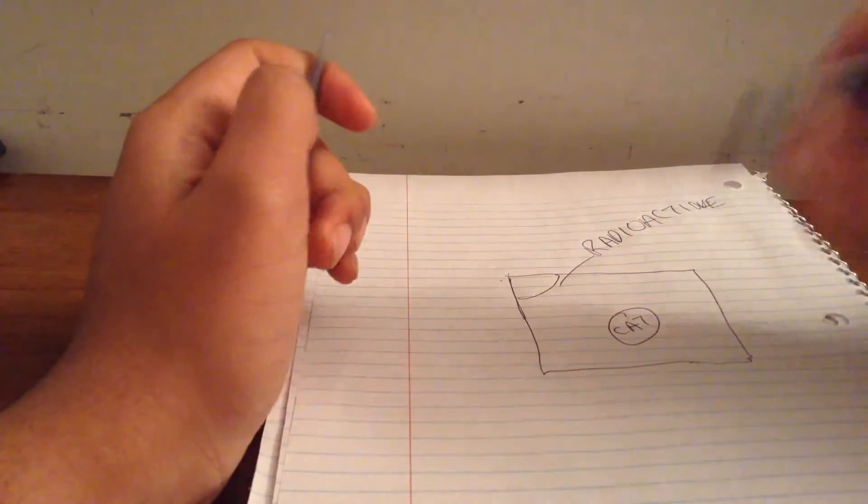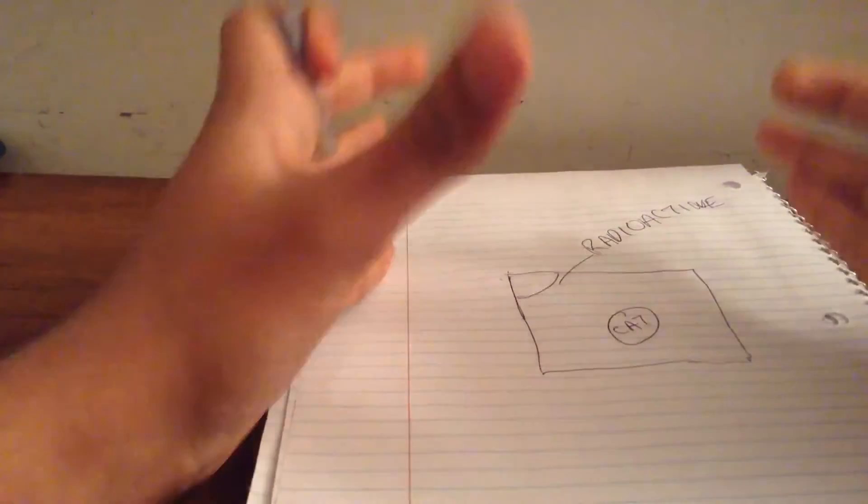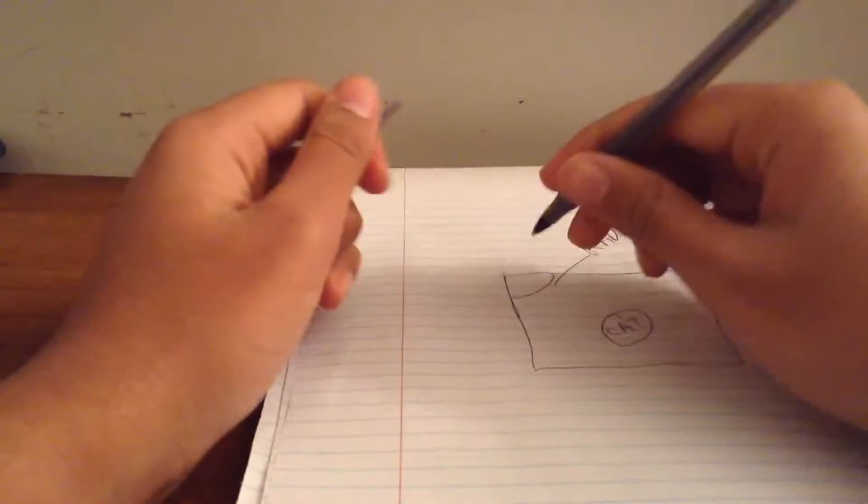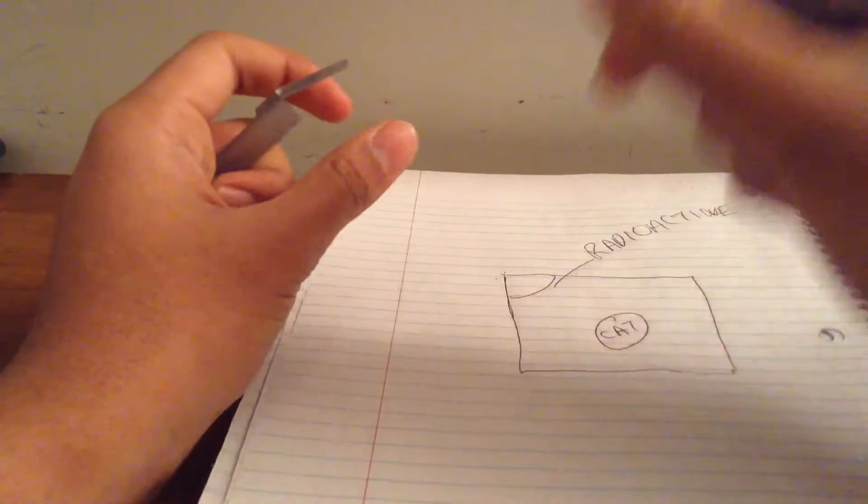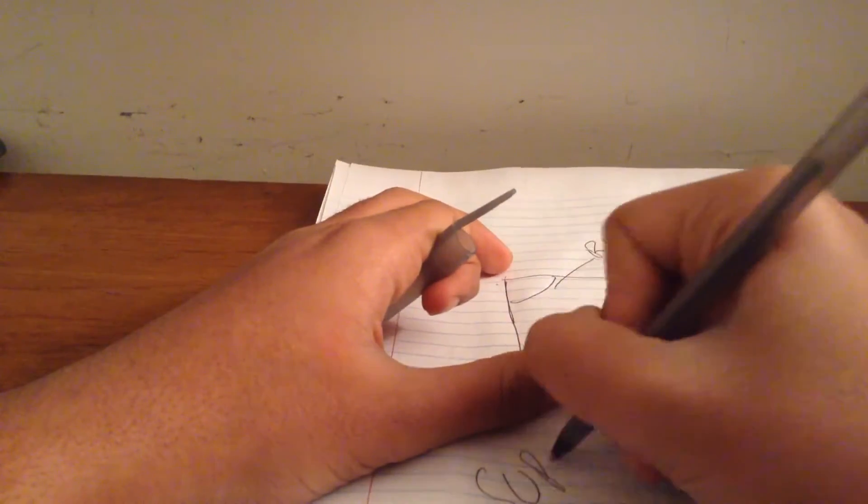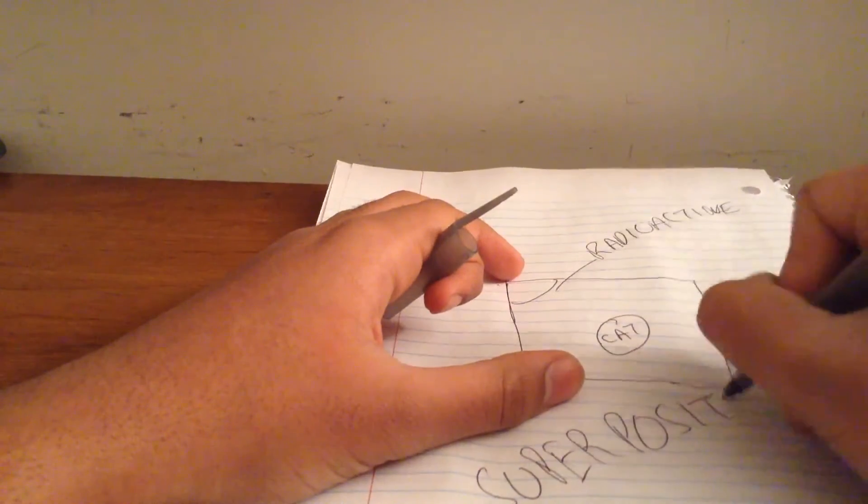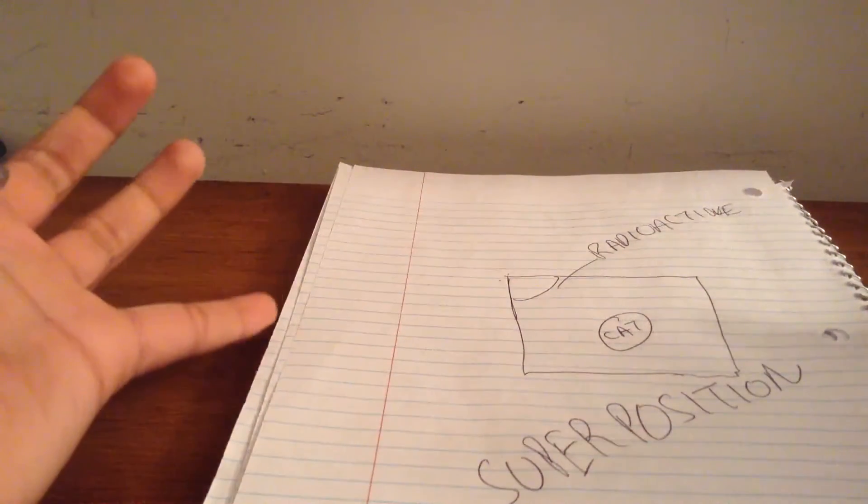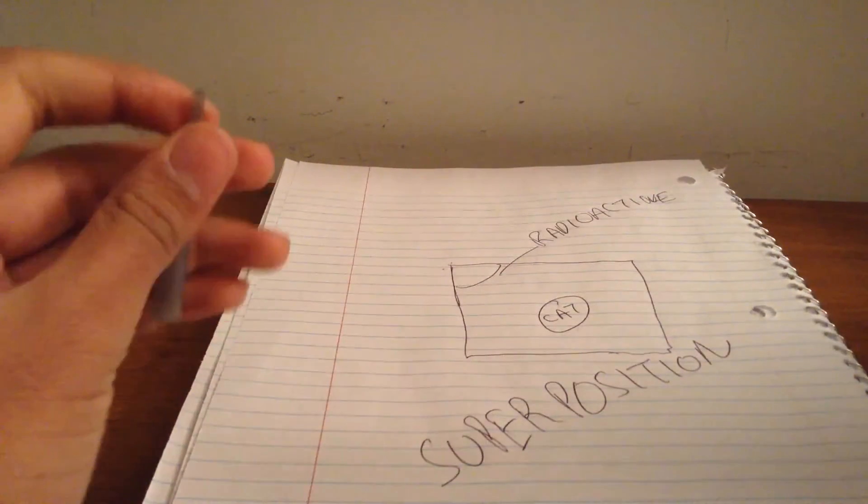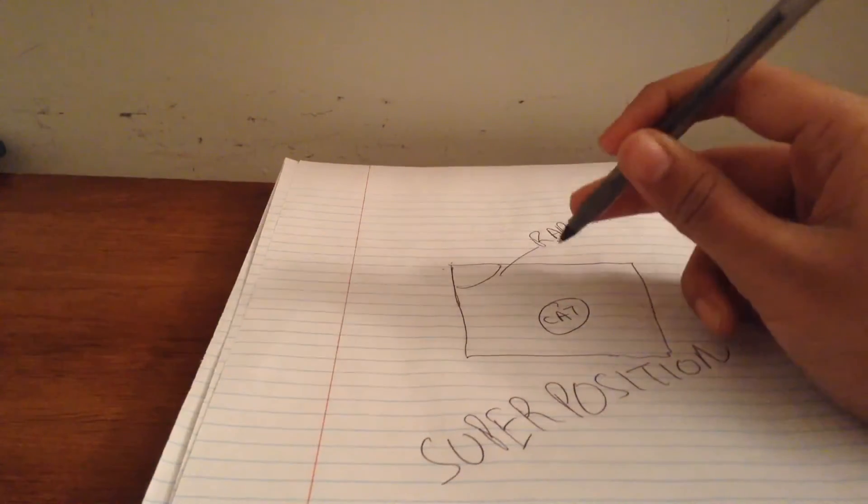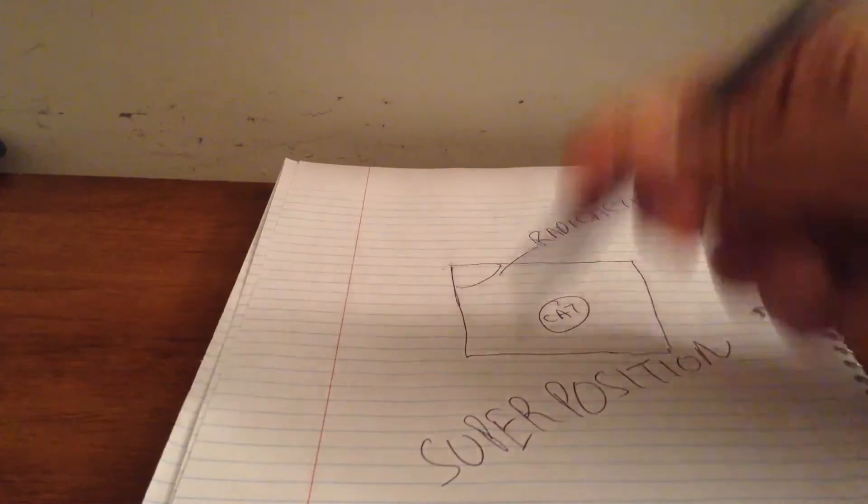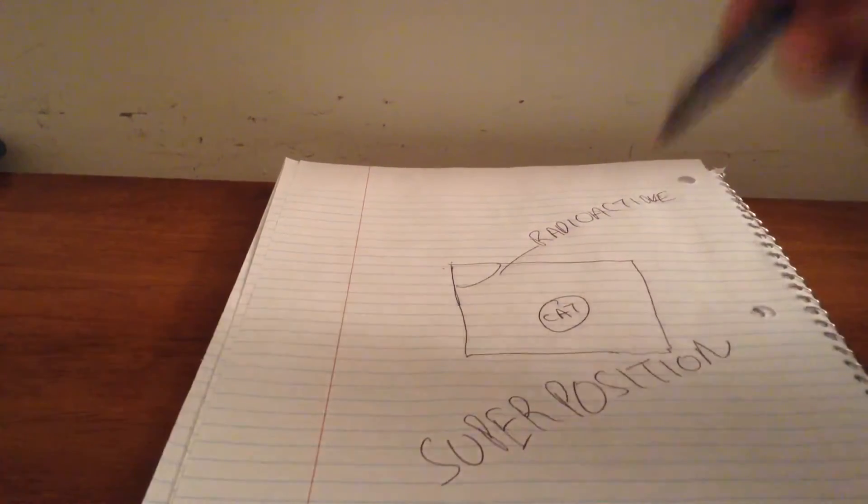So basically, at this time, when the box isn't open, when the cat is inside of the box, the radioactive substance is known to be in a superposition. Now, what is a superposition? Basically, what a superposition means is that the radioactive substance is considered to be both decaying and not decayed.